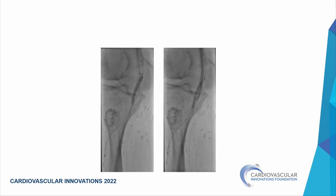I was confident the antegrade wire was in true lumen, but was uncertain about the retrograde wire beyond the AT. I proceeded with a balloon on the retrograde wire, attempted to connect with a 0.250T wire to re-enter the lumen, which failed. We then used a parallel balloon technique — balloon from the top and balloon from the bottom.